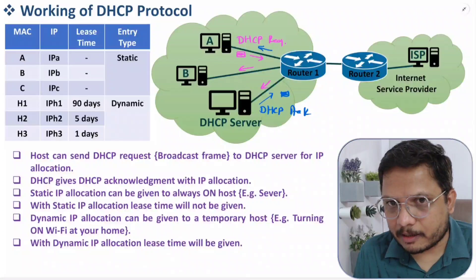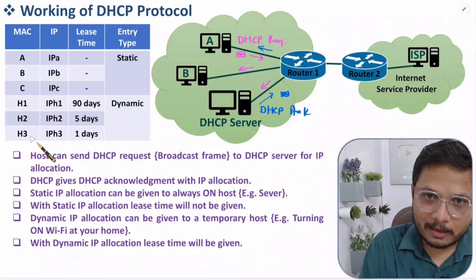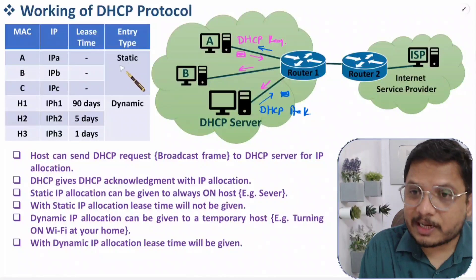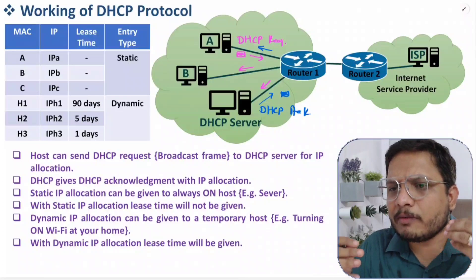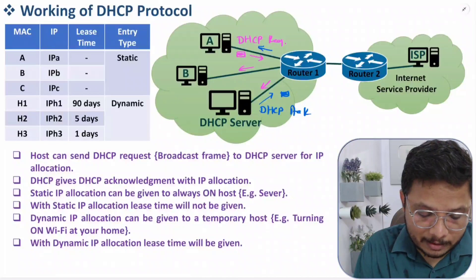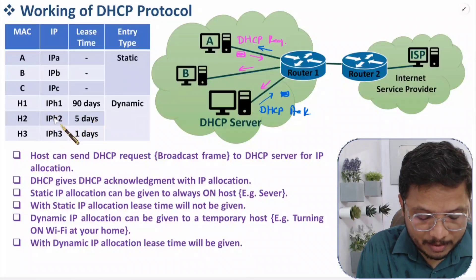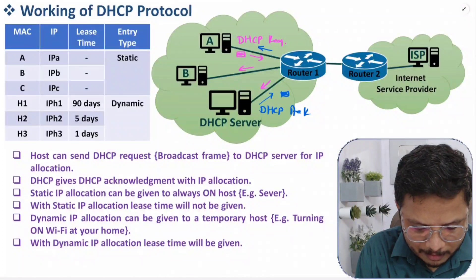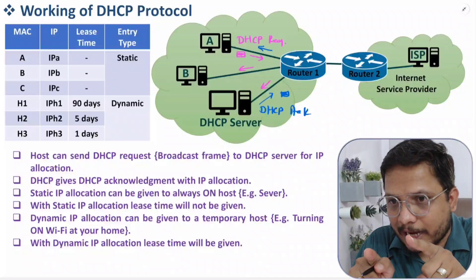There are two types of IP assignment: one is static and the second is dynamic. With the DHCP server there will be entries — with respect to MAC address there will be IP addresses, and those IP assignments could be static or dynamic. With static IP assignment there will be no lease time — static means always on, so those IPs are permanently given to particular hosts, which in majority of cases are servers. When it comes to dynamic IP assignment, there will be a lease time, and the maximum lease time for dynamic IP assignment is 90 days.